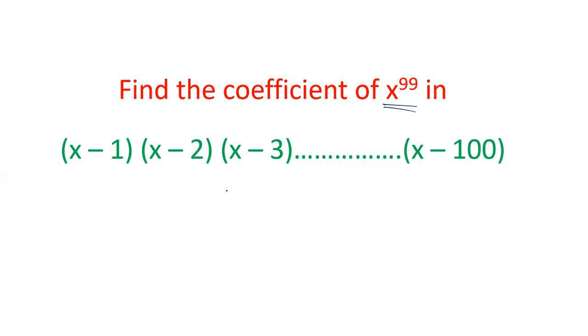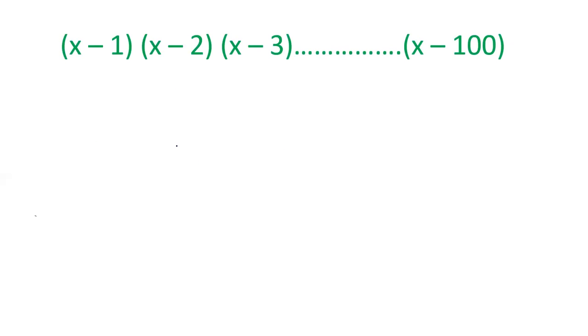Let's see how we can solve this question. I'll explain two concepts here. First of all, if there is only one bracket then it will be x minus 1. If there are two brackets and if you solve this you'll get x square, number of brackets are 2